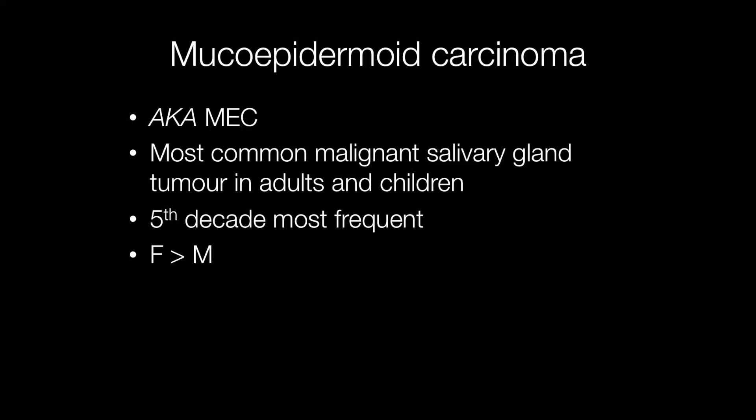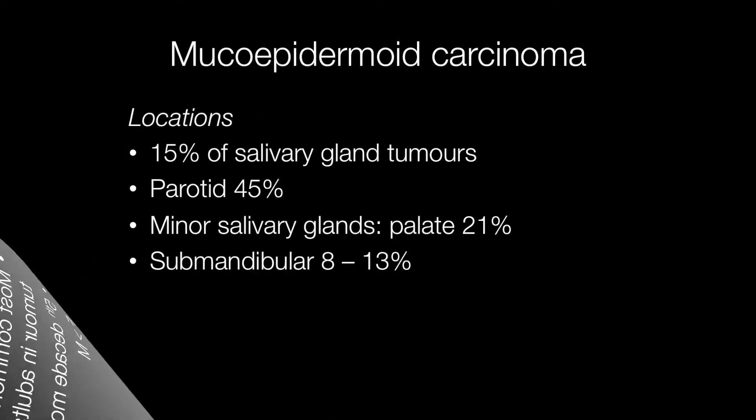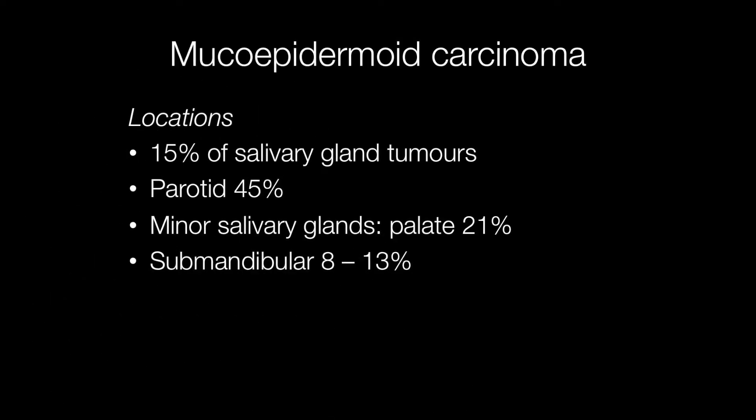This is a short overview of a type of adenocarcinoma of the salivary gland called mucoepidermoid carcinoma, also known as MEC. These are the most common malignant salivary gland tumours in adults and children, and the most frequent age at which they occur is in the fifth decade. Mucoepidermoid carcinomas are slightly more frequent in females than males, and account for around 15% of salivary gland tumours. The gland most frequently affected is the parotid gland, where approximately 45% of mucoepidermoid carcinomas occur.